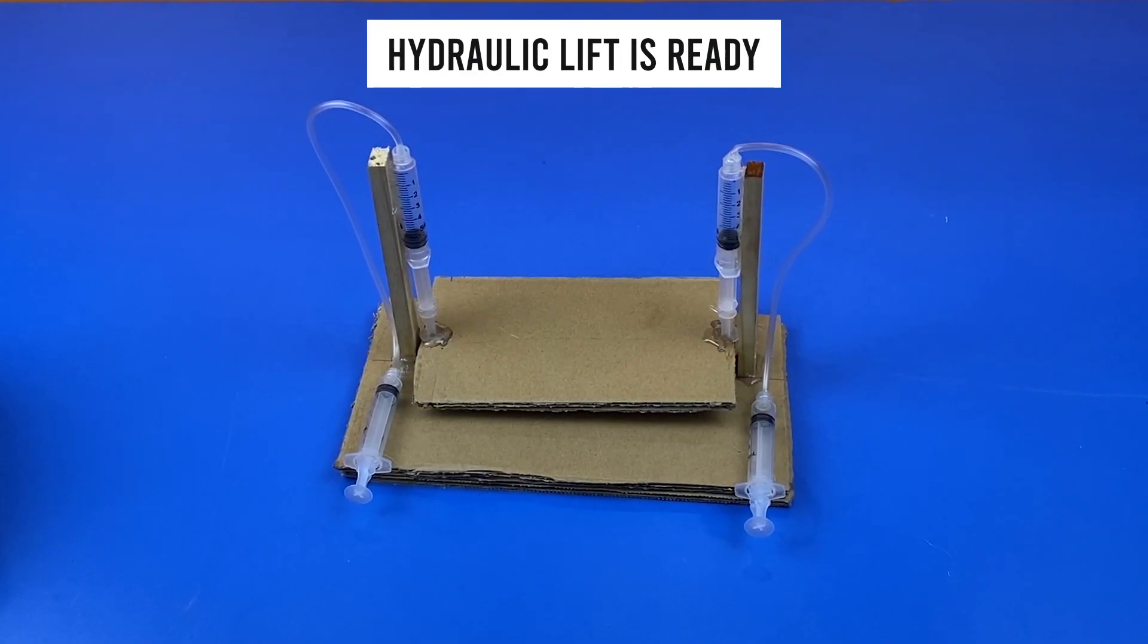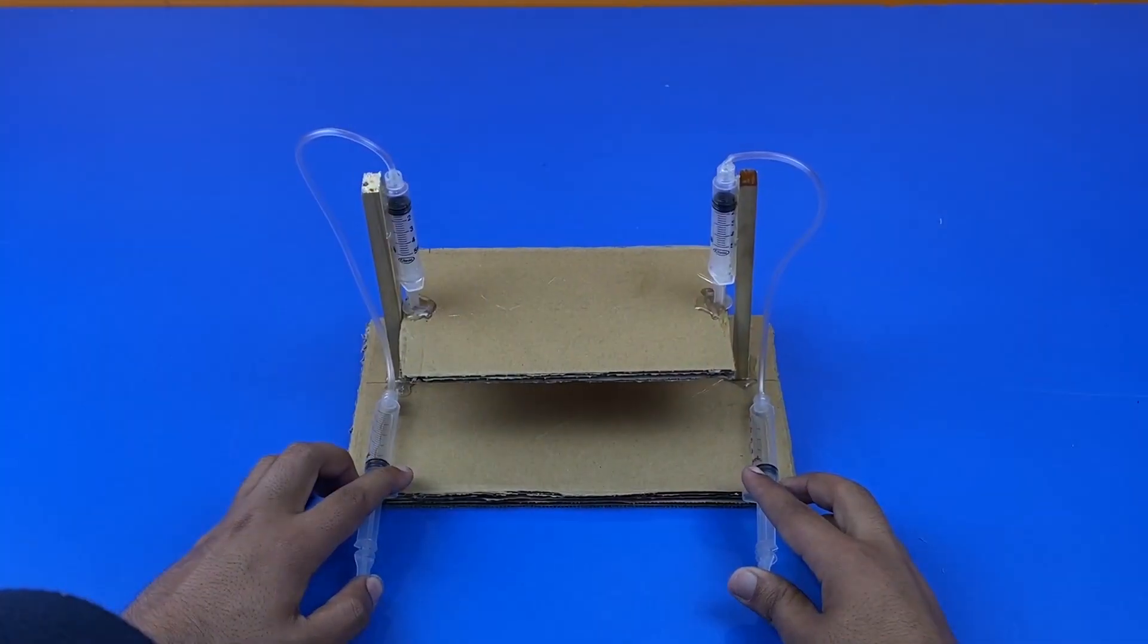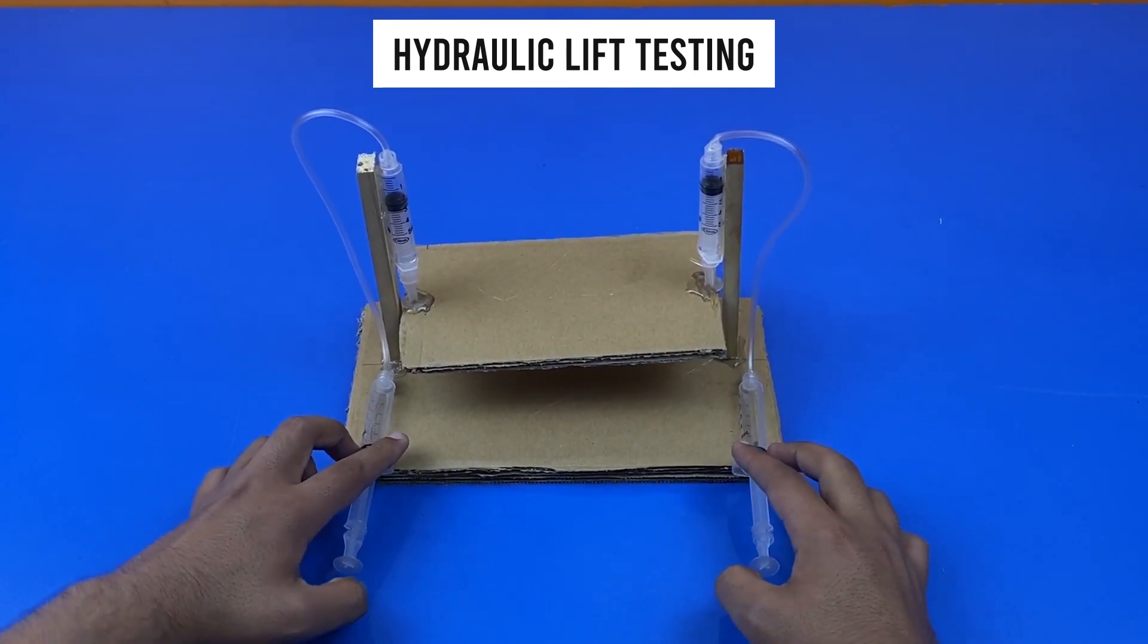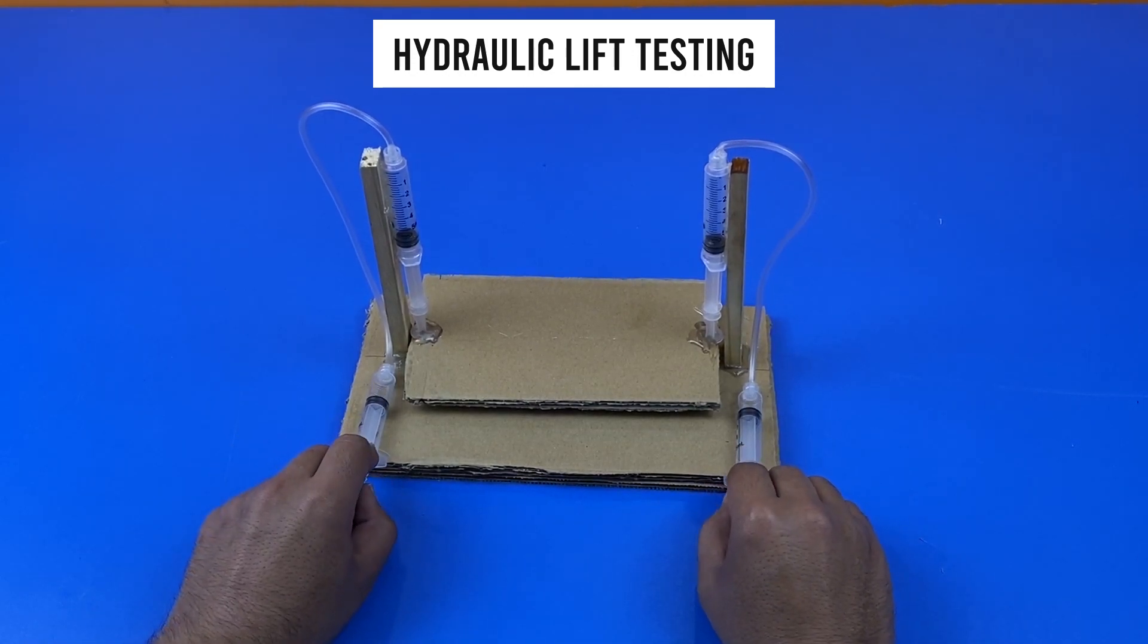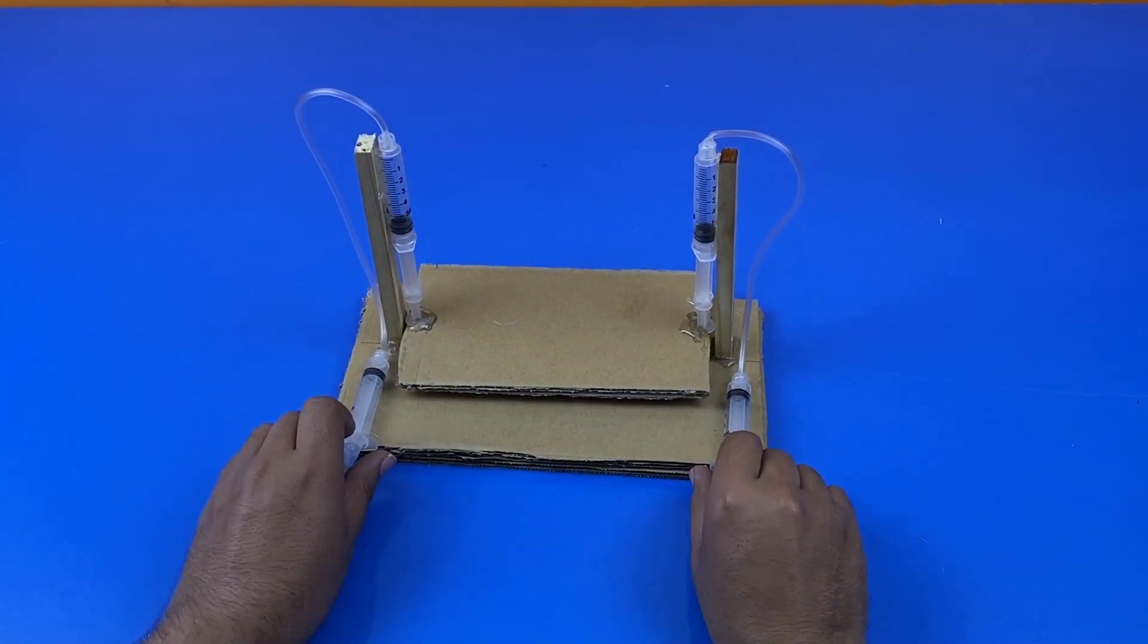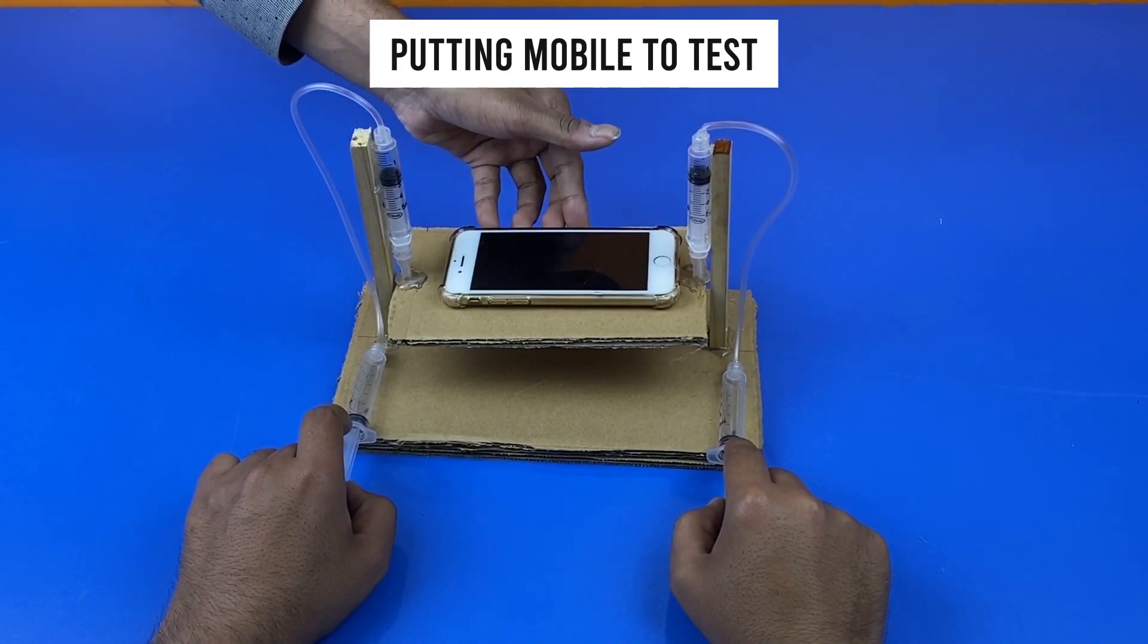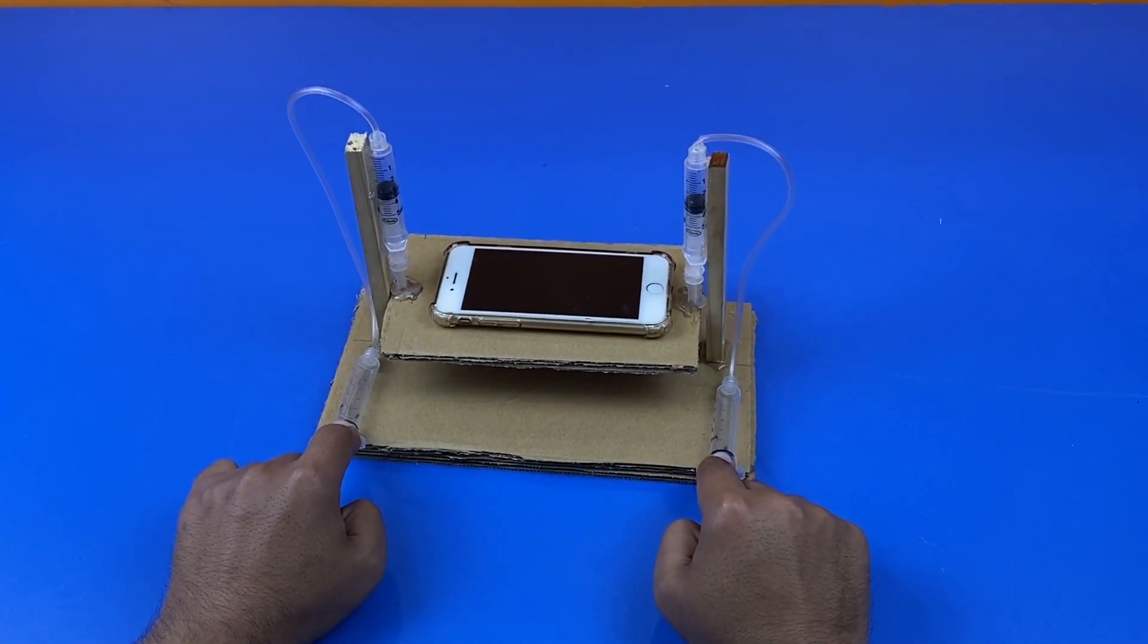The hydraulic lift is ready to be tested. Now let's test the hydraulic lift by placing a mobile phone on top. The upper cardboard bears the weight of the mobile and the hydraulic lift is working really smooth.